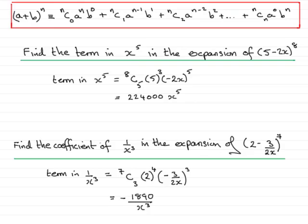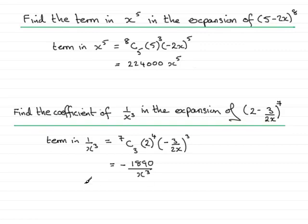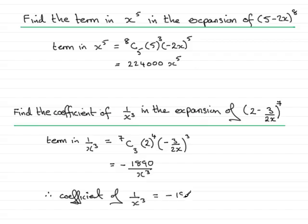So to finish this off, the coefficient of 1 over x cubed is equal to minus 1,890. And so here we have two examples: one finding a term and the other finding a coefficient. Hopefully, you should be able to model any question you're given on one or other of these examples.